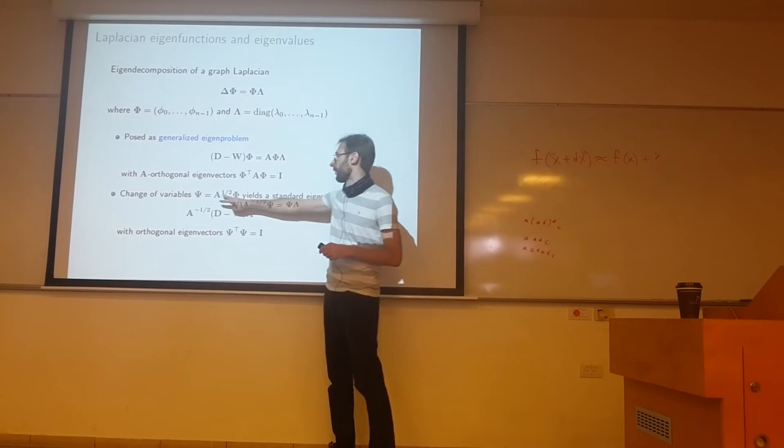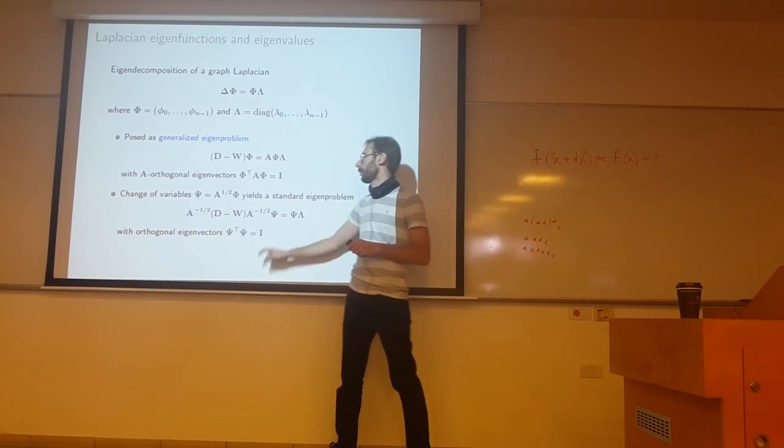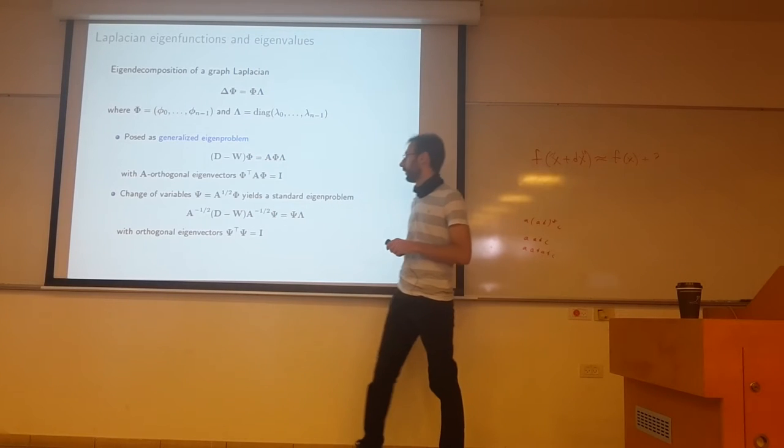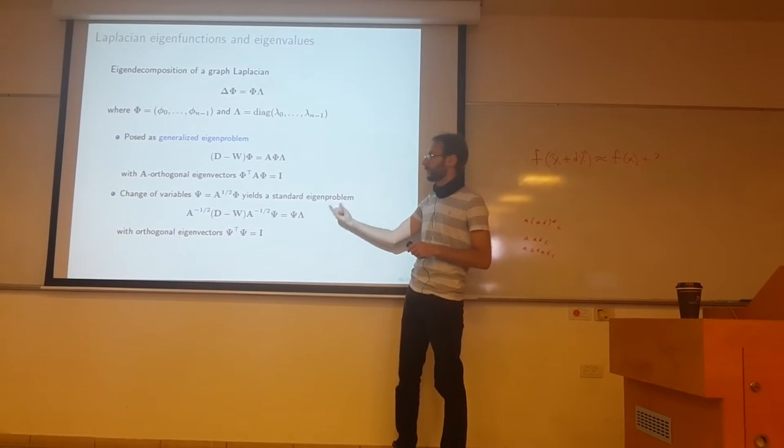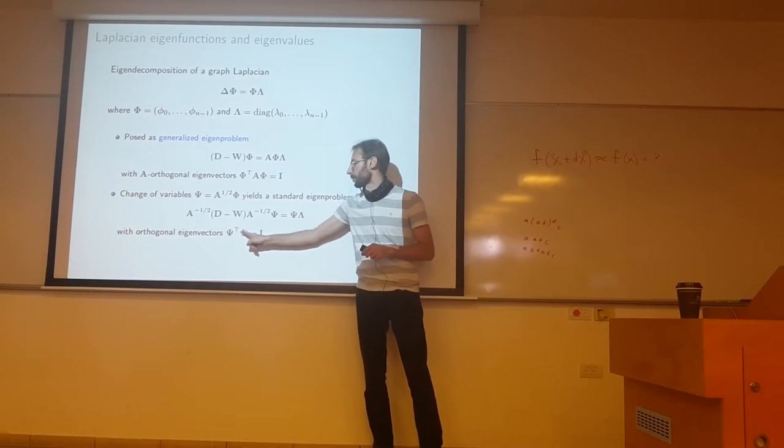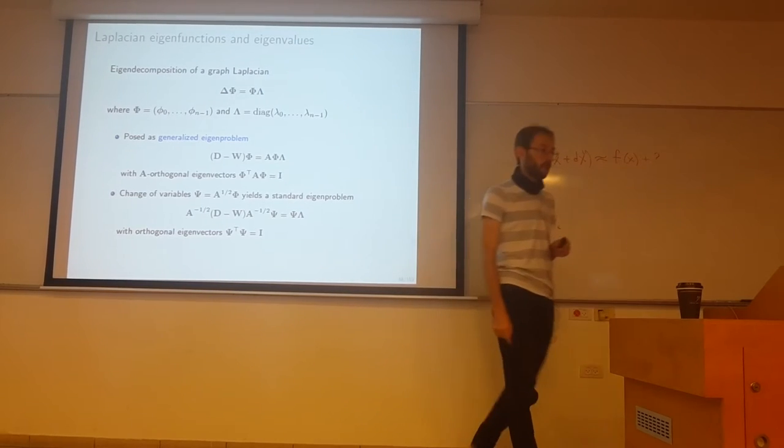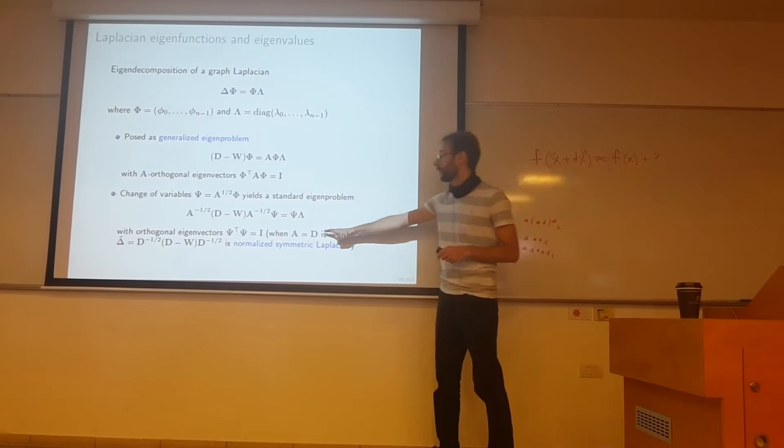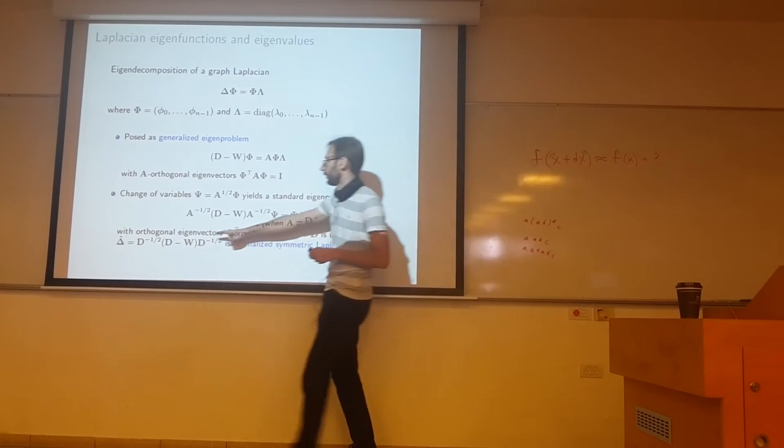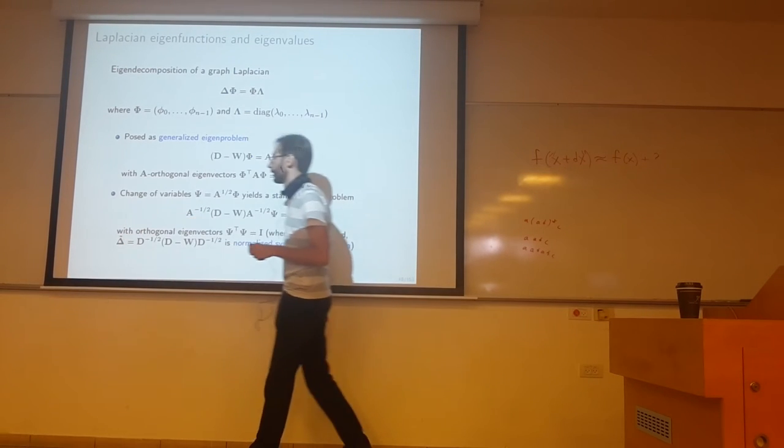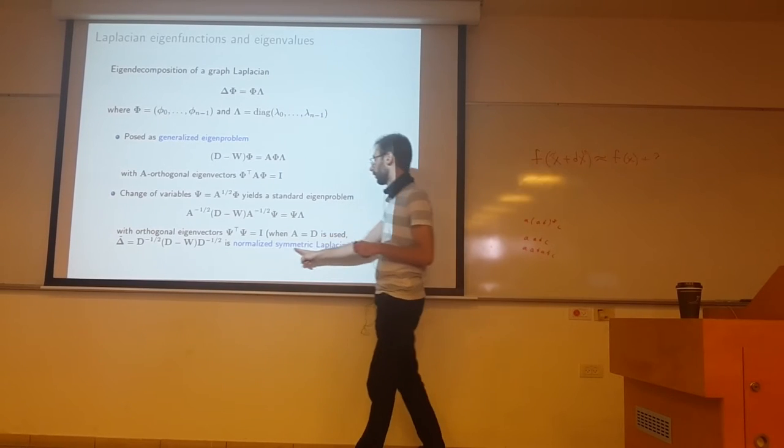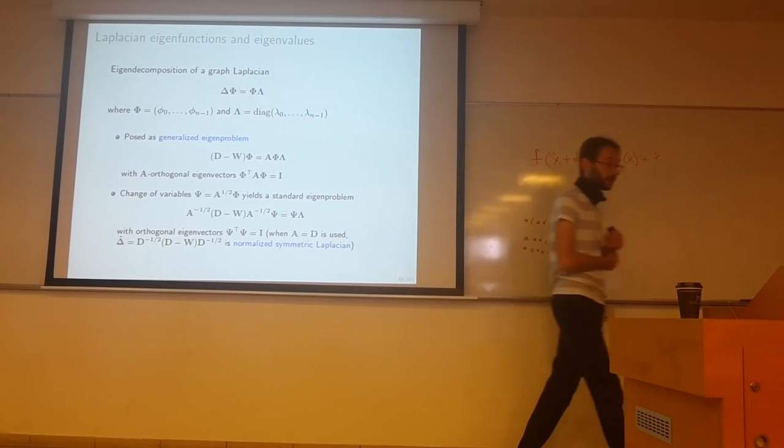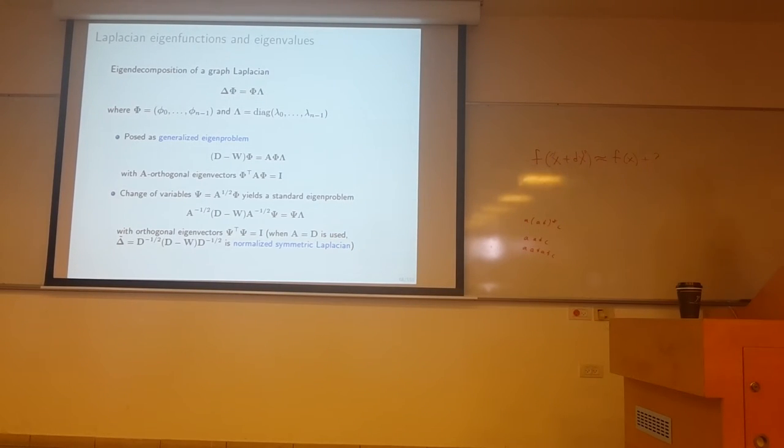You can also change the variables. Define psi equals to A to the half phi. Then you get a standard eigenproblem with orthogonal eigenvectors, psi transpose psi equals to I. And when you use A equals to D, then you get this system of coordinates called normalized symmetric Laplacian. This kind of Laplacian can be obtained in this particular case from the definitions that we've seen before.